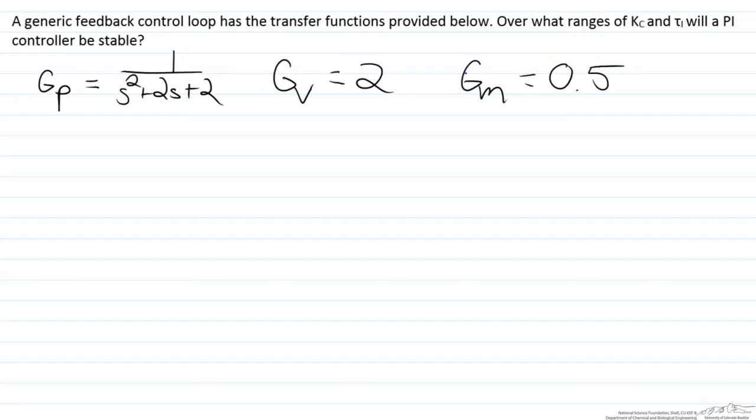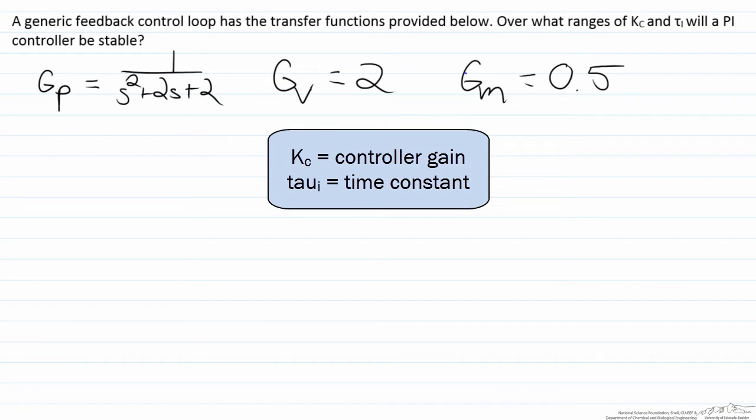In this screencast we will conduct a stability analysis for a process being controlled by a PI controller. The information is given on the screen: we have a second order process transfer function, a zeroth order valve transfer function, and a zeroth order sensor transmitter transfer function. We're trying to determine what range of Kc and tau I will allow the controller to be stable.